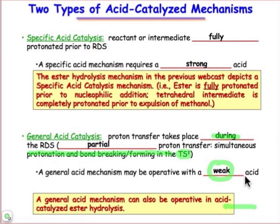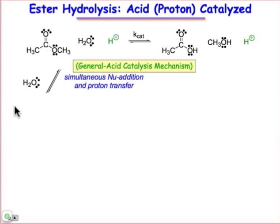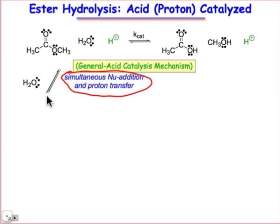This is a mechanism that can operate just as we saw in the case of the specific acid-catalyzed hydrolysis of esters. The general acid-catalyzed mechanism can also operate for ester hydrolysis. The mechanism is going to show up with some differences in the way that the curved arrows are drawn. In the general acid-catalyzed mechanism, the key thing is this simultaneous nucleophile addition and proton transfer — we're not going to fully protonate that carbonyl.